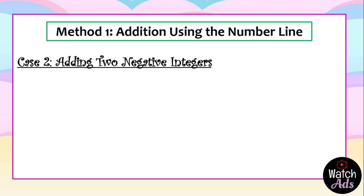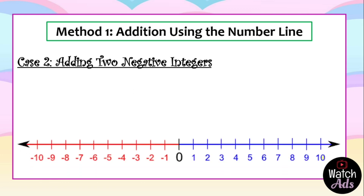Let's have our second case: adding two negative integers. Here's the number line. The given is negative three plus negative two. Same process — we start with the first addend, which is negative three. We find negative three on the number line. Negative integers are always located on the left side of the number line.